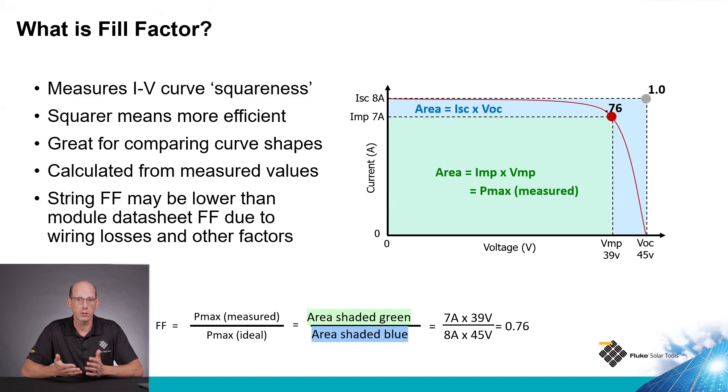Typically fill factor is somewhere around 0.72 to 0.77, 0.76, somewhere in that range. The higher the number is, the more efficient the module is.